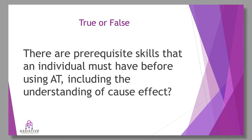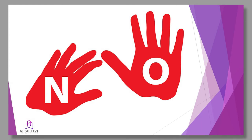There are prerequisite skills that an individual must have before using AT, including understanding cause and effect — but there's a lot of controversy about this. Cause and effect comes really early in life: a baby cries and mommy comes — that's cause and effect. A toddler drops a toy and you pick it up — that's cause and effect. As soon as lights are turned on, if the individual has vision, they look toward the light — that's cause and effect. So the answer is no, we don't need to have prerequisites — cause and effect is essentially automatic.